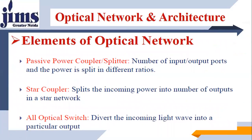What are the elements of optical networks? We have passive power couplers or splitters with a number of input-output ports where power is split in different ratios. We have star couplers which split the incoming power into a number of outputs in a star network. We also have optical switches that divert the incoming light into a particular output.